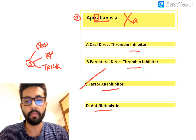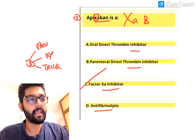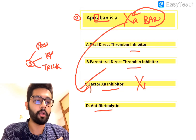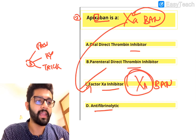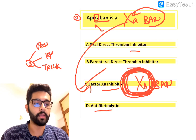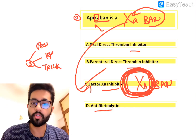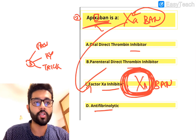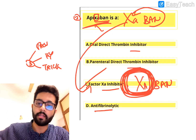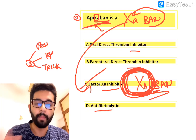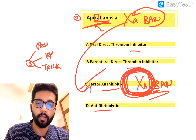The drug name contains XA, which stands for factor 10A — so it inhibits factor 10A. Factor 10A inhibitors are all '-xabans' and they all have XA in their name. You can use this in two ways: when direct questions are asked like this, and also to rule out options — if apixaban is listed as an option for 'direct thrombin inhibitor,' you know XA means it's a 10A inhibitor, not the answer. All factor XA inhibitors are oral drugs; there are no parenteral factor 10A inhibitors.